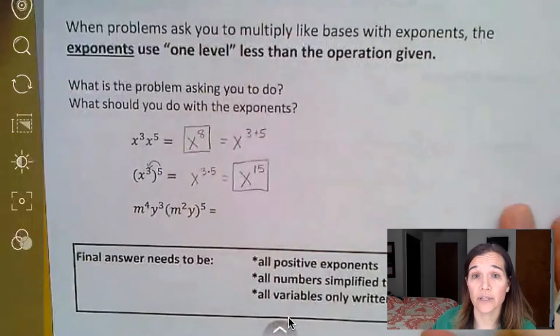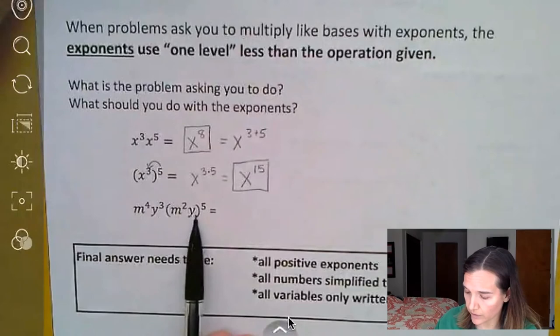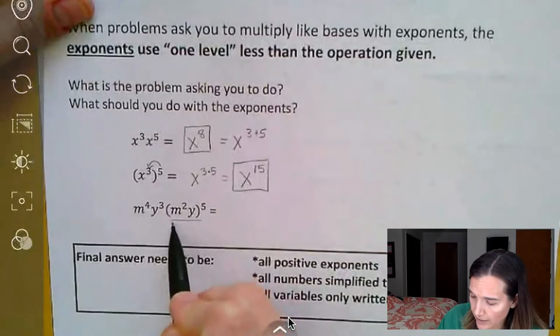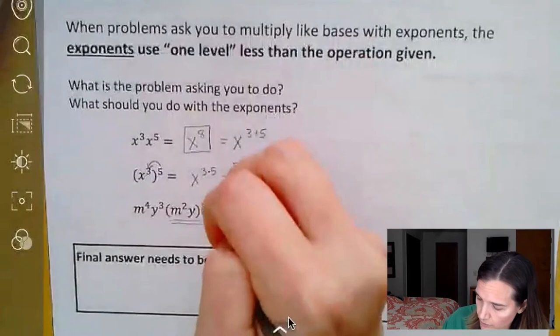This one's a kind of multi-stepper again. We have to follow order of operations. Notice we're multiplying this with this, but we're also taking this section to the fifth power. And again, we always want to do exponents before we multiply when it comes to order of operations. So I'm going to rewrite this first part,